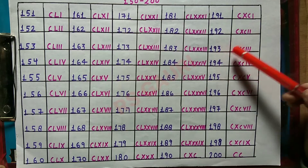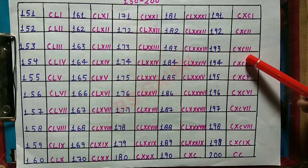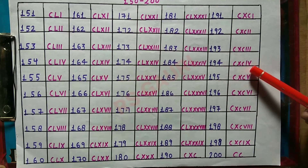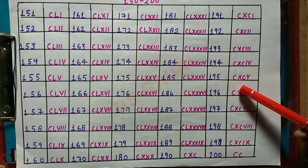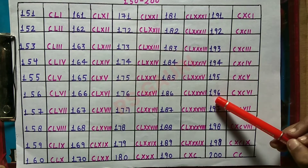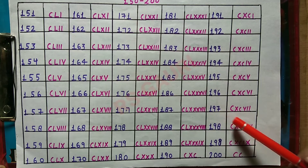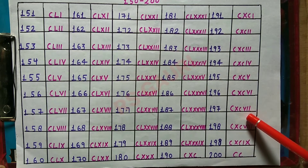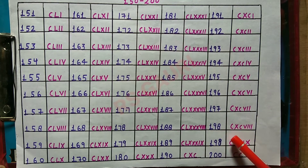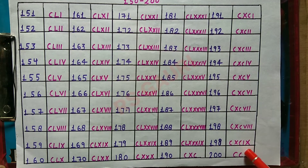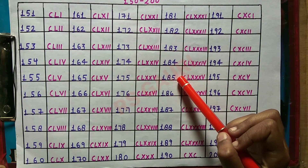187: CLXXXVII. 188: CLXXXVIII. 189: CLXXXIX. 190: CXC. 191: CXCI. 192: CXCII. 193: CXCIII. 194: CXCIV. 195: CXCV. 196: CXCVI. 197: CXCVII. 198: CXCVIII. 199: CXCIX. 200: CC. Please subscribe to my channel for more videos.